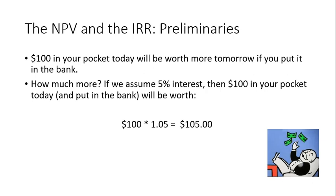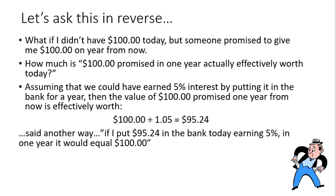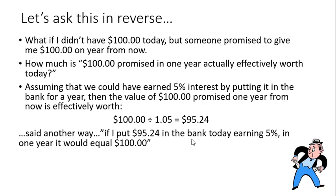You would do the same with Vietnamese dong. 100 VND at 5% will give you 105 a year from now. This is intuitive going forward. What we may not understand is how to do this in reverse. What if you didn't have $100 today, but someone promised to give you $100 a year from now? You might ask yourself: how much is $100 promised in one year effectively worth today? This is where it gets a little complicated. What's the effective value of that money promised tomorrow?